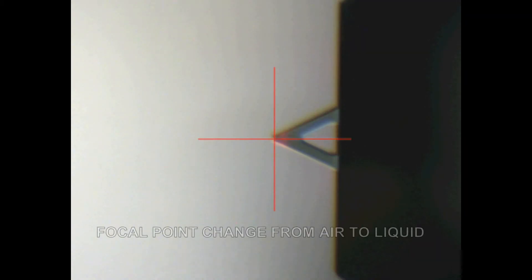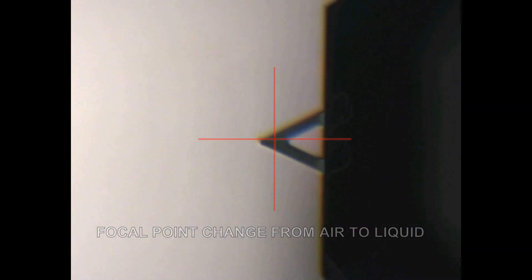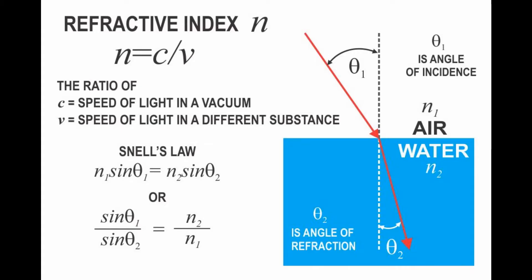The apparent position of the probe and the path of the laser will be altered by the phase change from an air to liquid environment. This phenomenon is a result of the change in refractive index, which is defined as the ratio of the speed of light in a vacuum to the speed of light in a different medium.